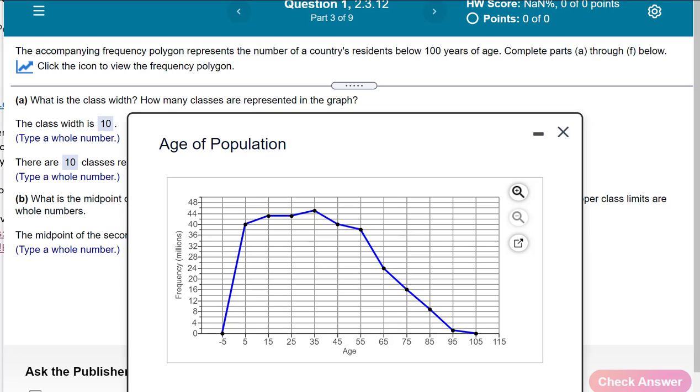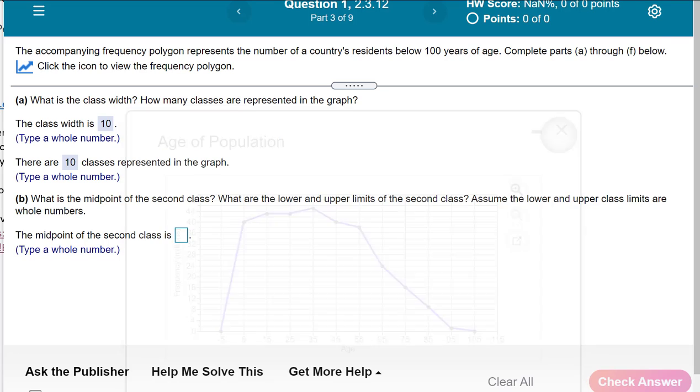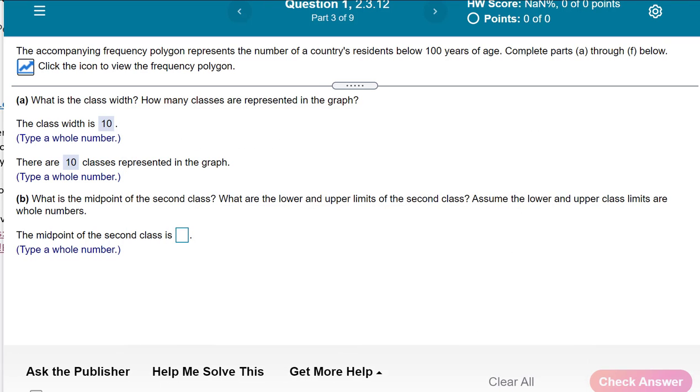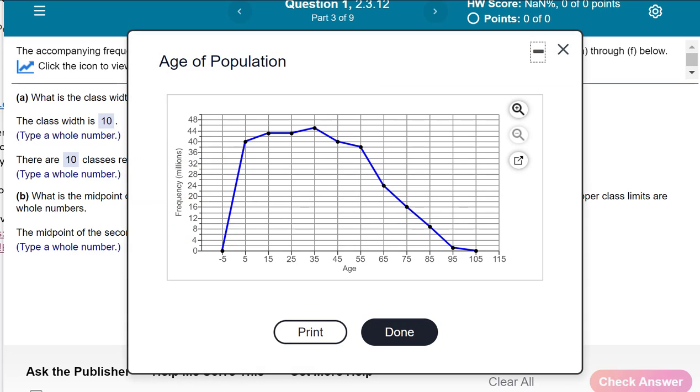Now what is the midpoint? Let's see which one. I don't see it, I'll close it. What is the midpoint of the second class? What's the lower and upper limit of the second class? Okay, let's bring it back up. Second class, you just go to the second point, don't count the first one. So you go 1 and then 2.